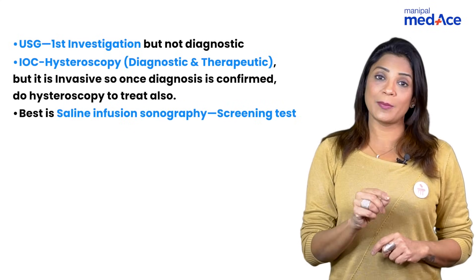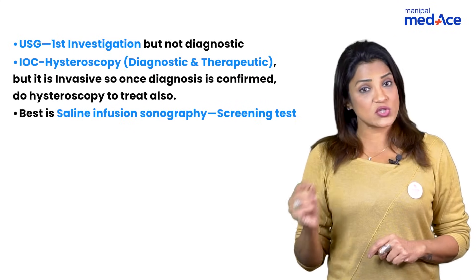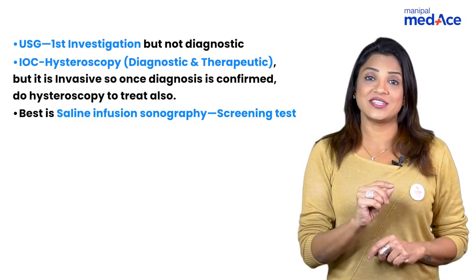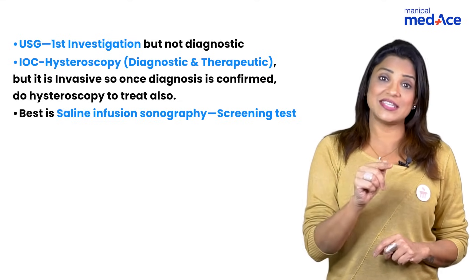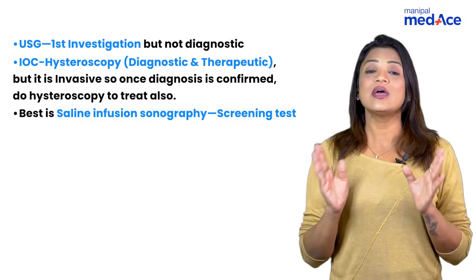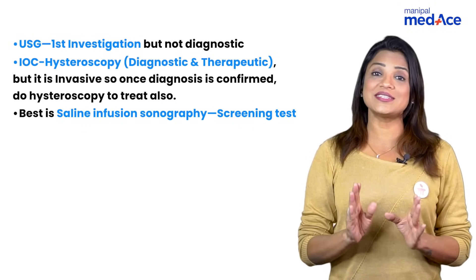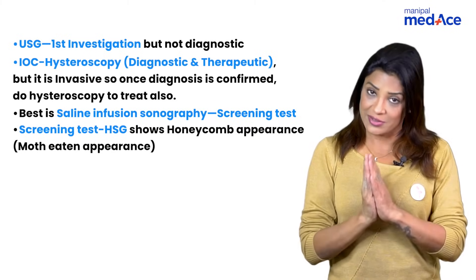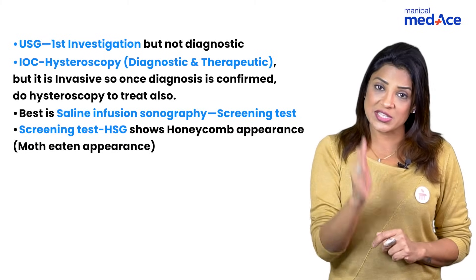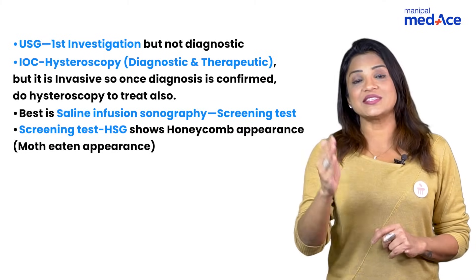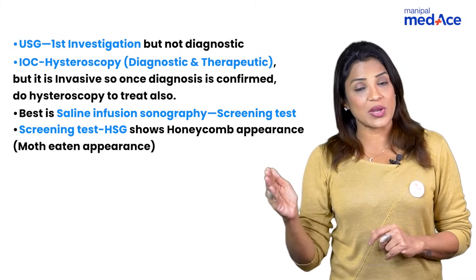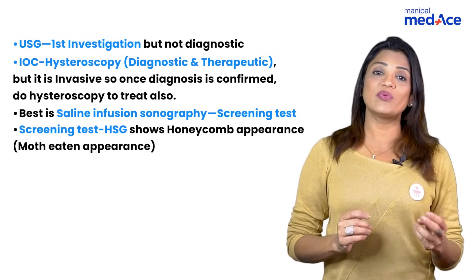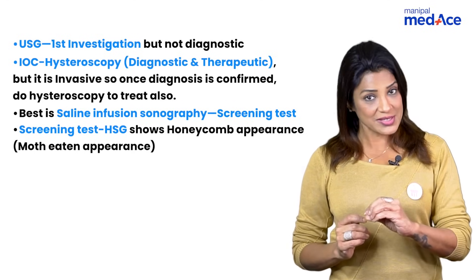Trans-vaginal sonography can be combined with either saline infusion sonography, depending on the expertise of the doctor, or HSG. HSG and SSG have almost similar efficacy. What you get in HSG is a honeycomb appearance because of the adhesions inside in Asherman's syndrome. So the first investigation will be TVS, second can be SSG or HSG to diagnose, and once it is diagnosed, then you can go for hysteroscopy along with therapeutic hysteroscopy.